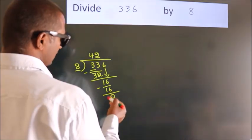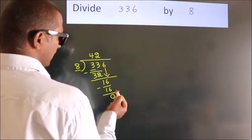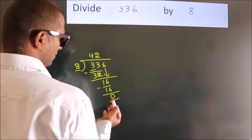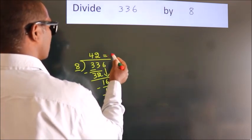After this, no more numbers to bring it down. And we got remainder 0. So, this is our quotient.